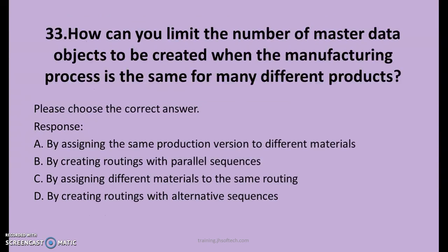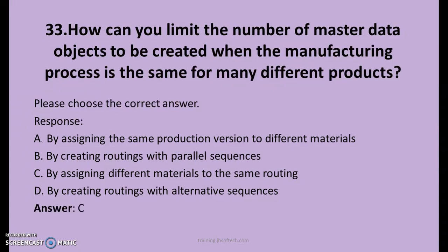33rd question. How can you limit the number of master data objects to be created when the manufacturing process is the same for many different products? A. By assigning the same production subversion to different materials. B. By creating routings with parallel sequences. C. By assigning different materials to the same routing. D. By creating routings with alternative sequences. The right answer is C: by assigning different materials to the same routing.